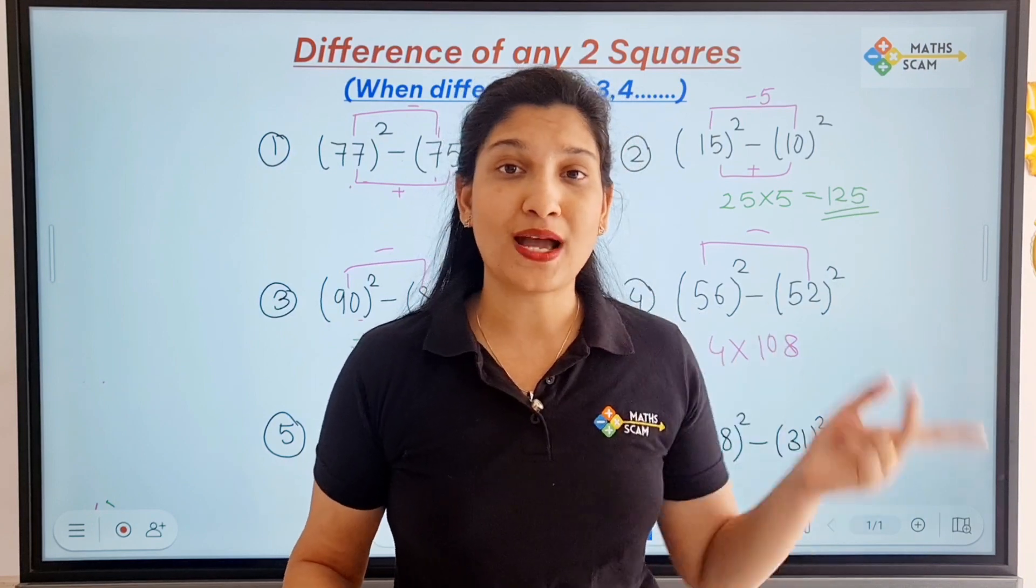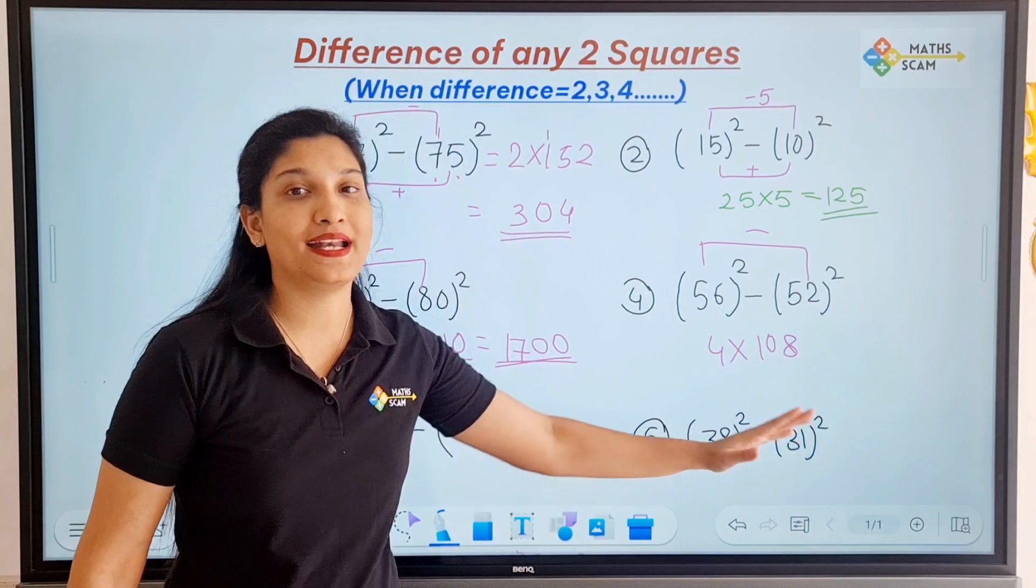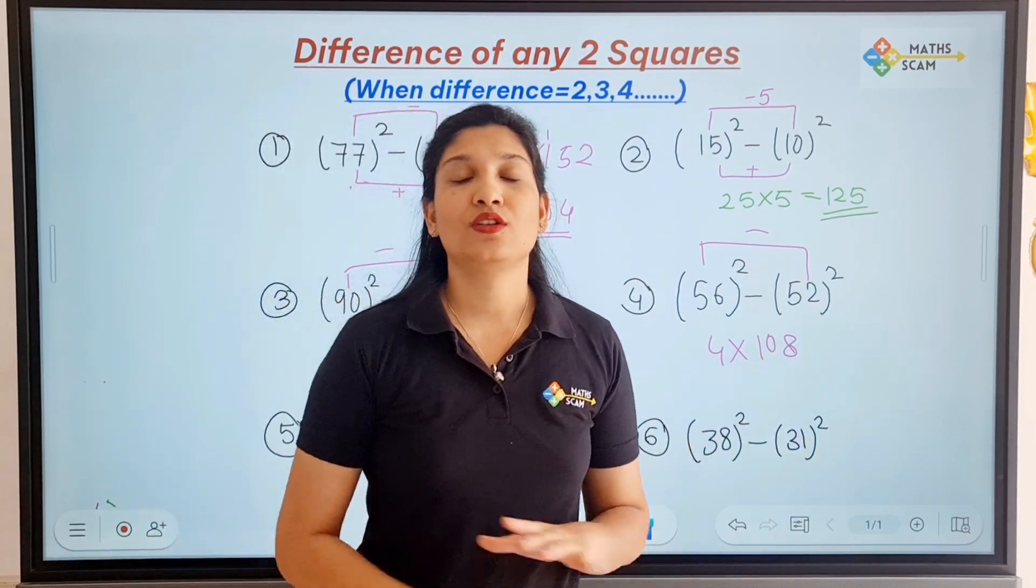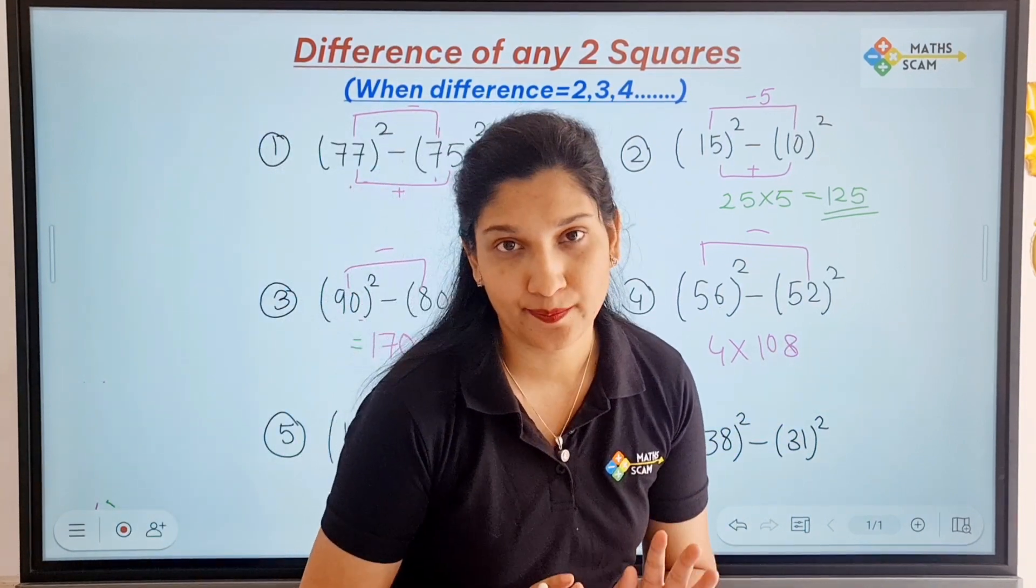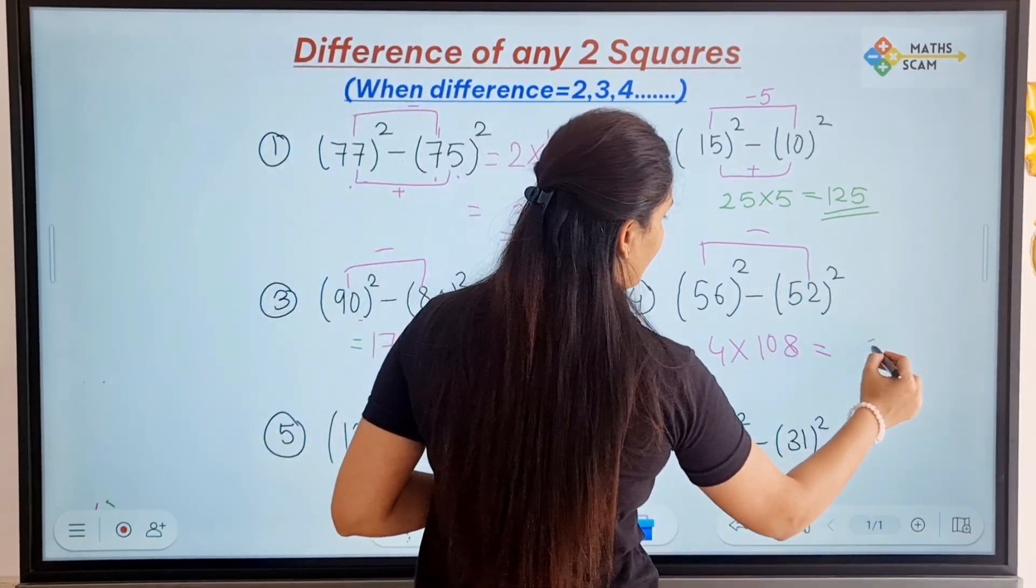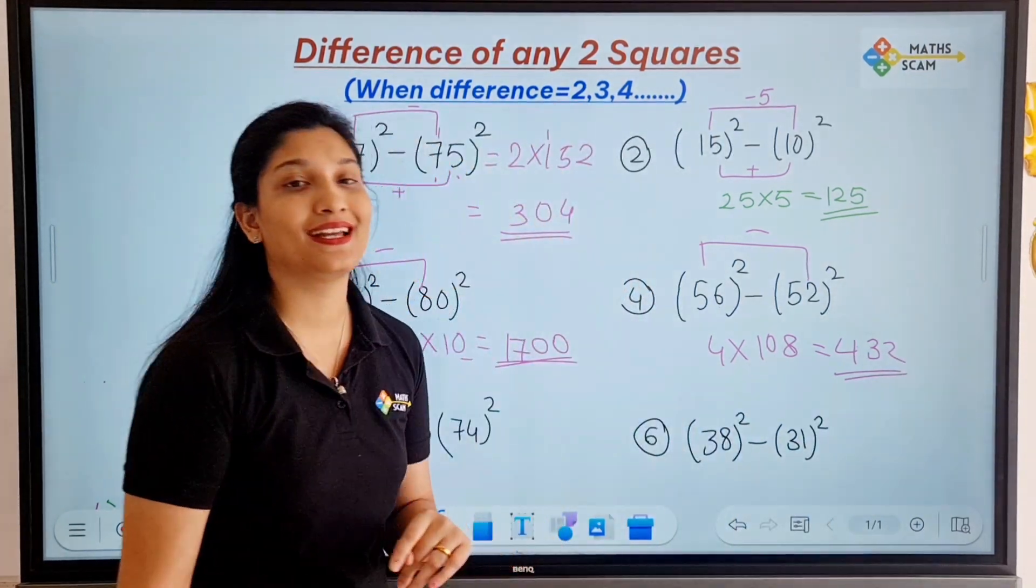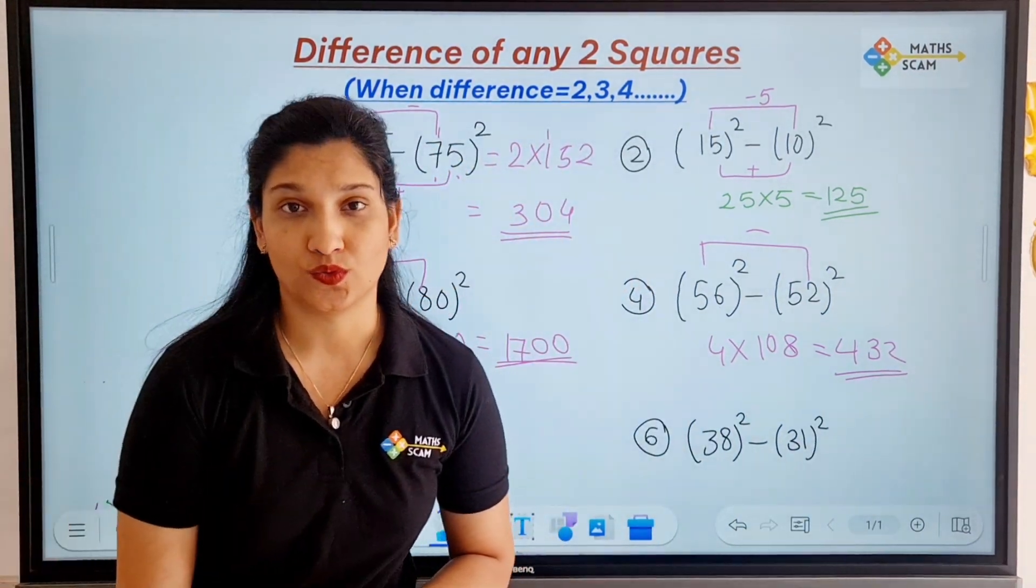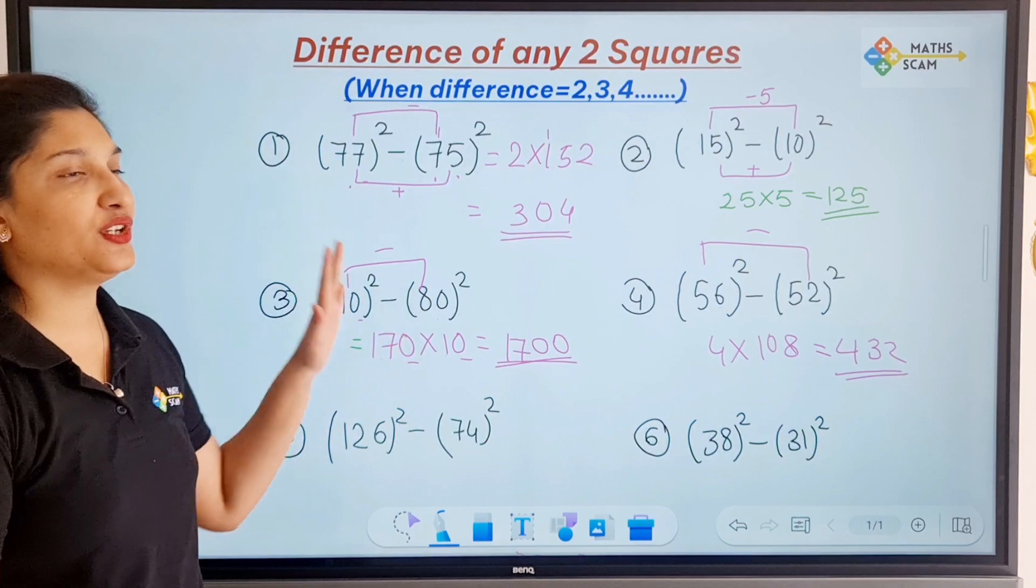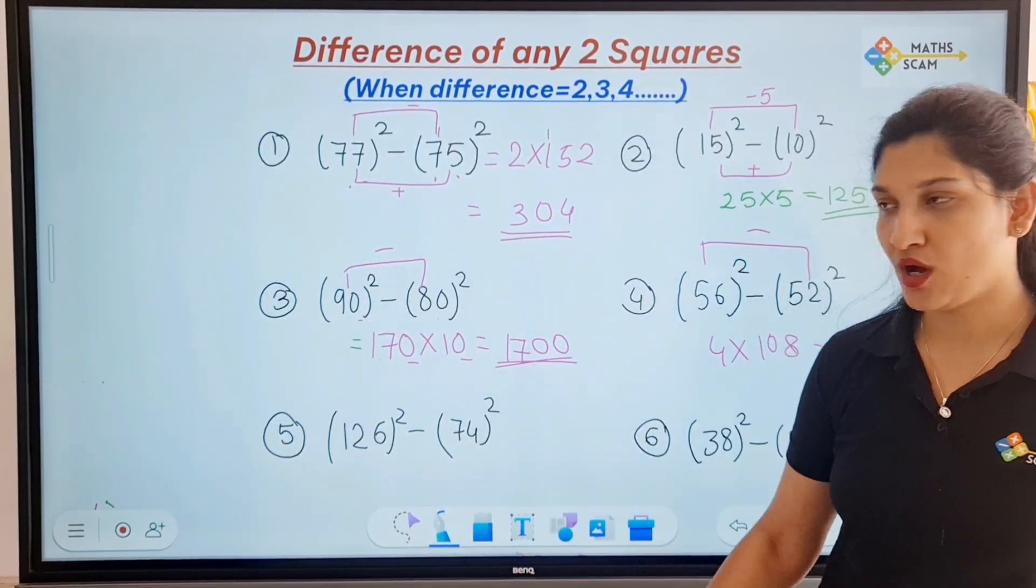So either you do addition first or subtraction first, you are getting the same answer. So 108 times 4 is, 8 fours are 32, 4 ones are 4, so the answer is 432. Simple addition, subtraction, multiplication, easy, easy, easy, full stop.